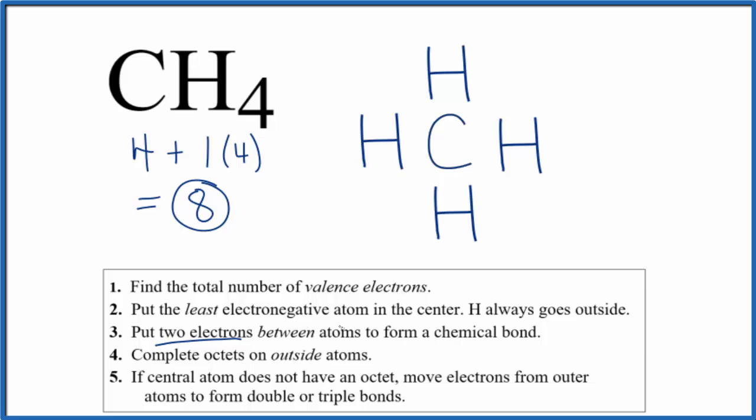Next, we'll put two electrons, a pair of electrons, between atoms, and that's going to form our chemical bond. We'll put two electrons between each hydrogen and the carbon, and this forms the bond.